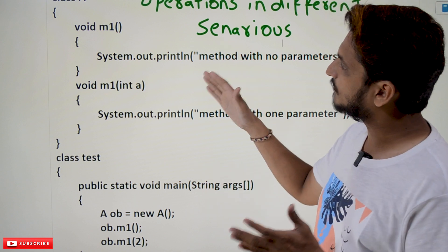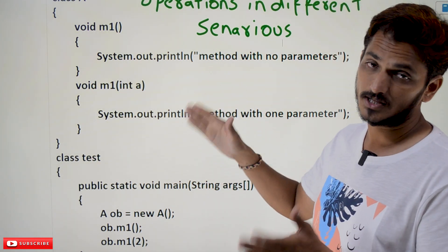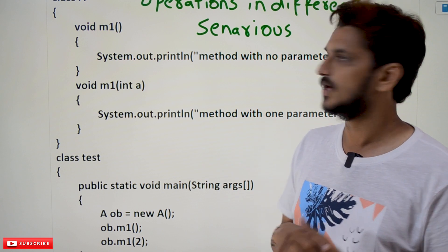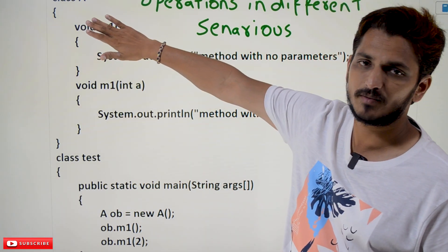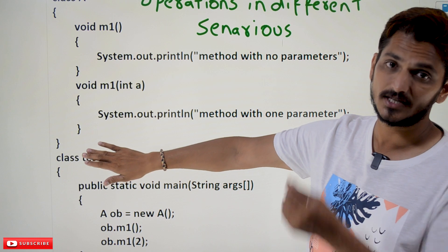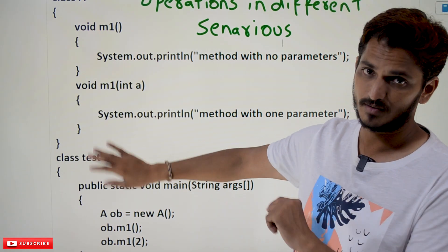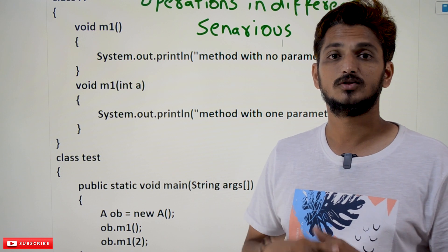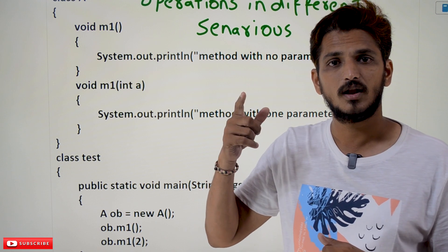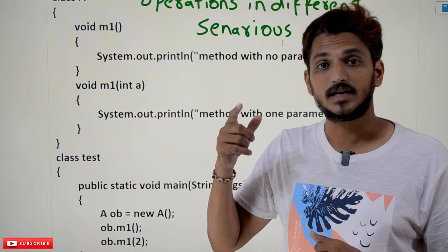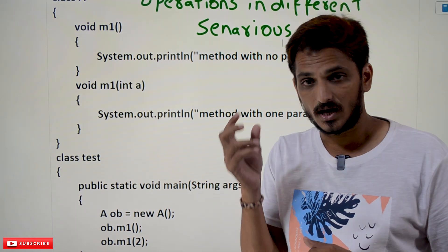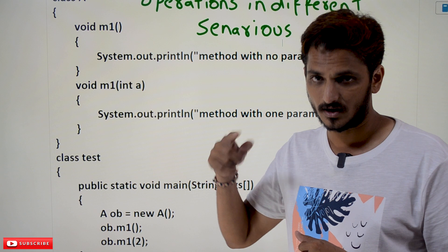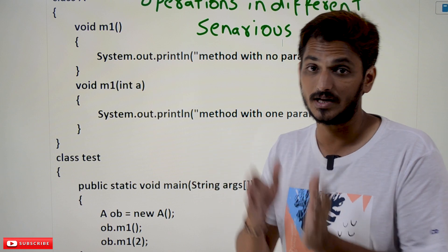The same polymorphism can be obtained using another concept also — method overriding. One class is having an m1 method, and another class which is inheriting class A is also having an m1 method with the same name and same signature. Which method we need to call — that can be identified during the runtime. How we are going to identify using runtime, that we are going to understand in our next class.